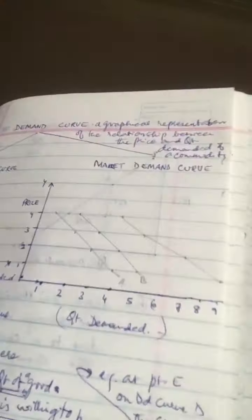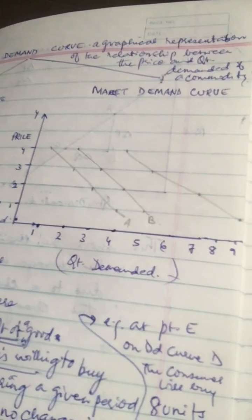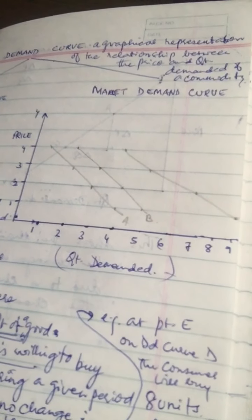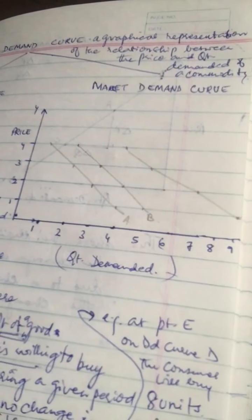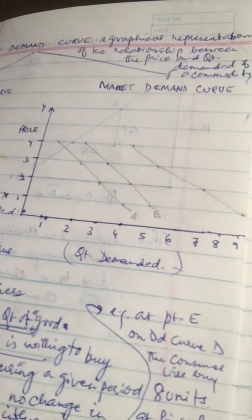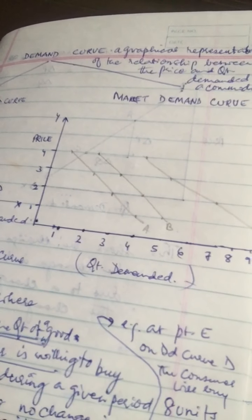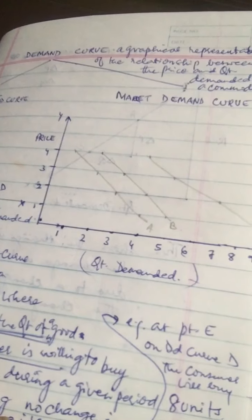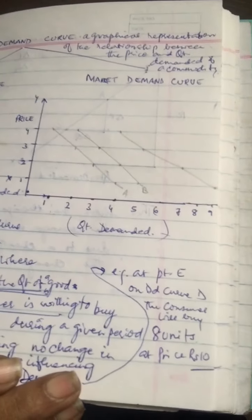Now let's look at the market demand curve. It is a horizontal summation of all the demand for that particular product — the demand of all consumers taken together. The negative slope of the market demand curve shows that more quantity is demanded at lower prices. Each demand curve is drawn on the assumption of Ceteris Paribus, meaning other things remaining unchanged.